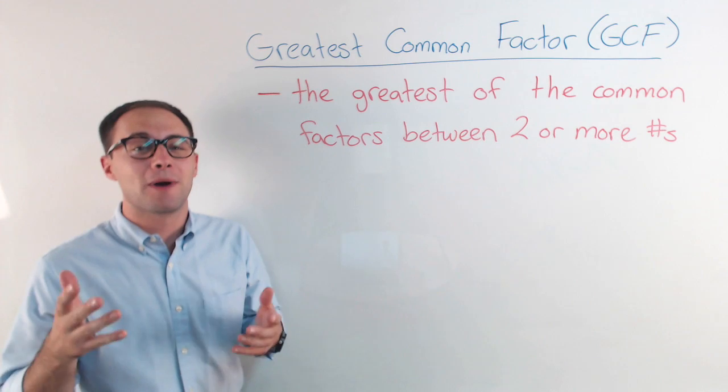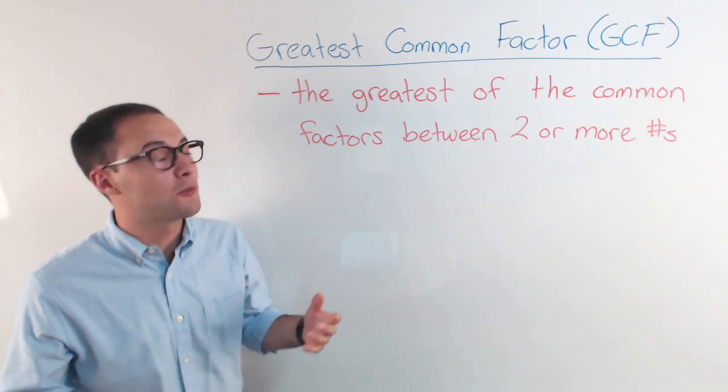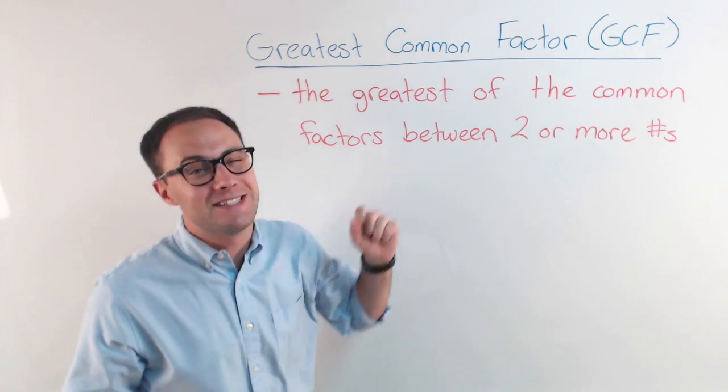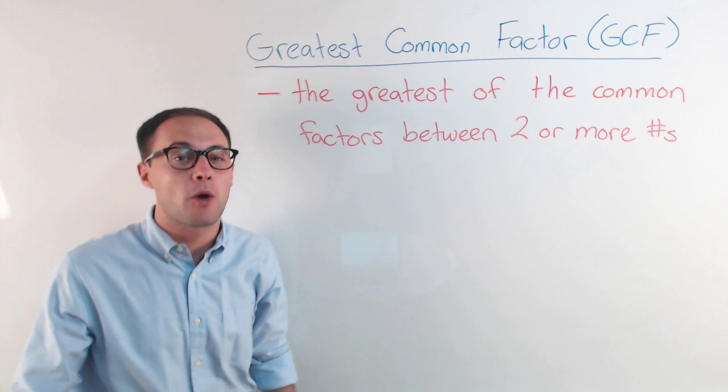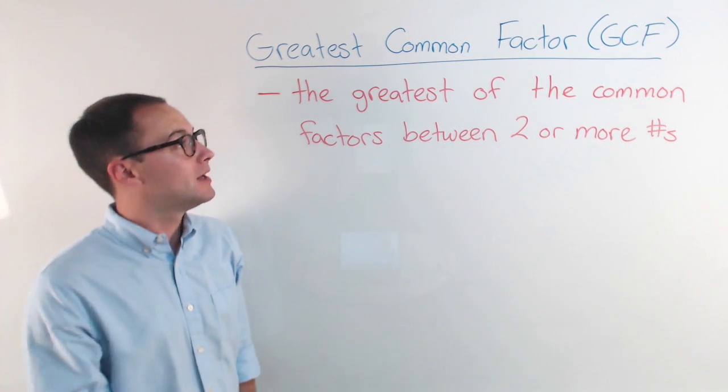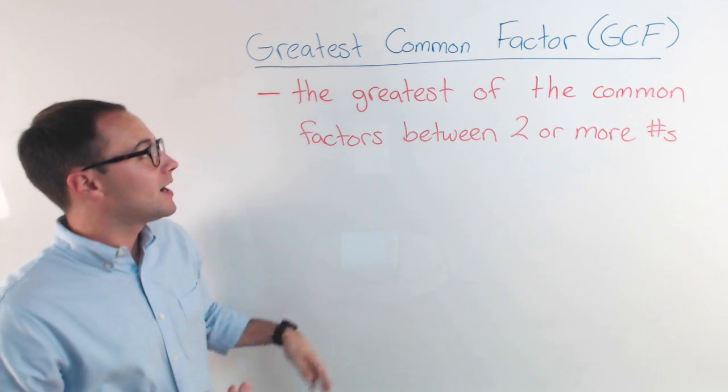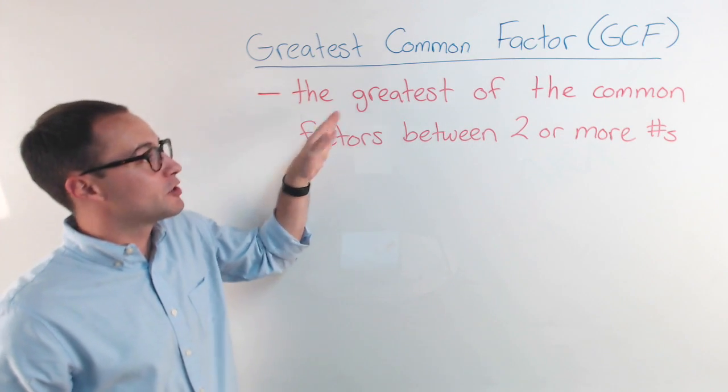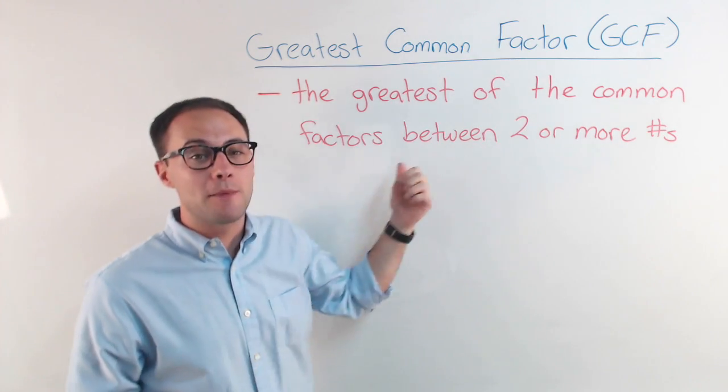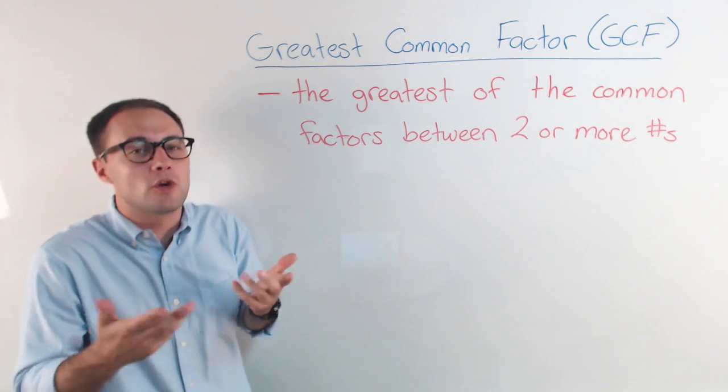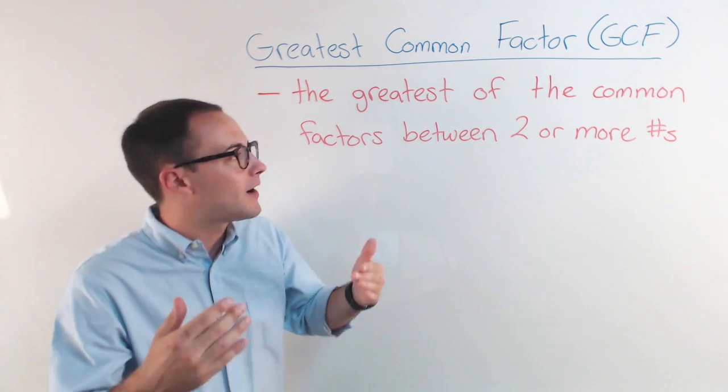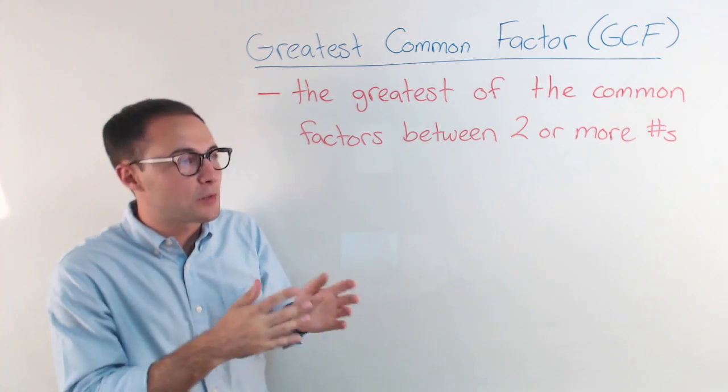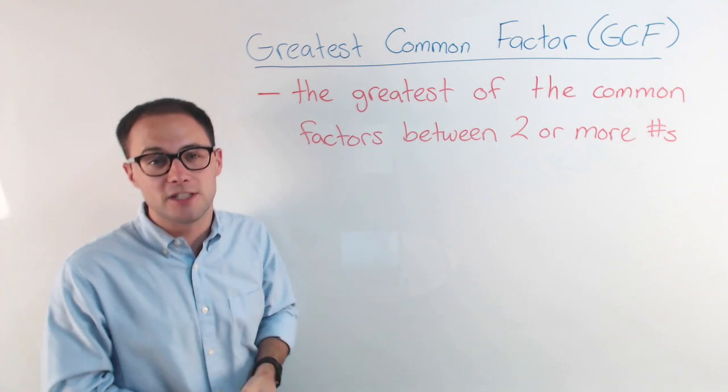Alright, today's all about the Greatest Common Factor, or more commonly known as the GCF. So first, let's talk about what is the Greatest Common Factor, and it's pretty simple. If you just look at the name, the Greatest Common Factor is just the greatest of the common factors between two or more numbers. You find the common factors, and then whichever one's the greatest, that's your GCF.